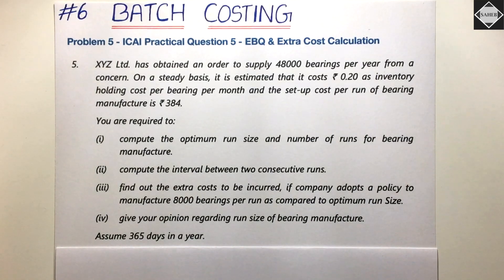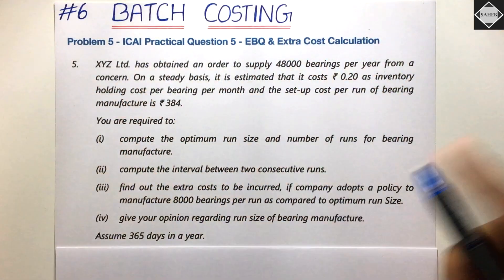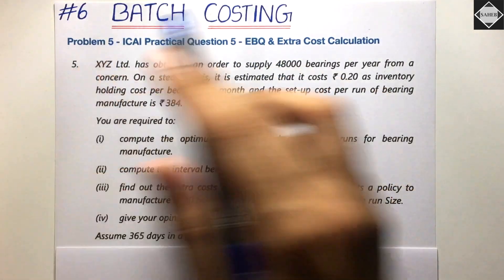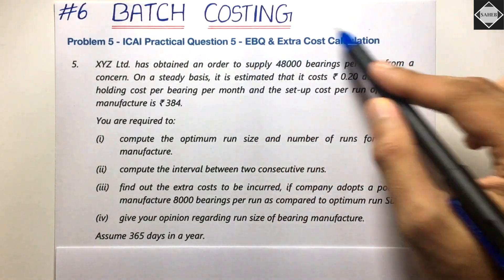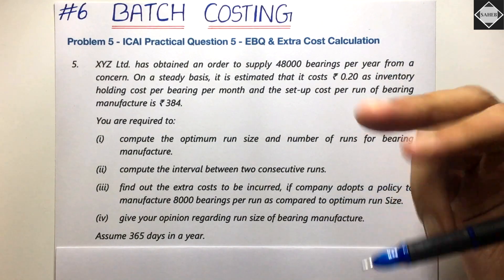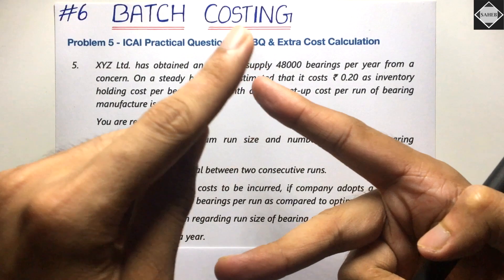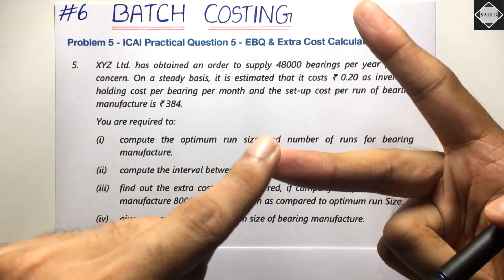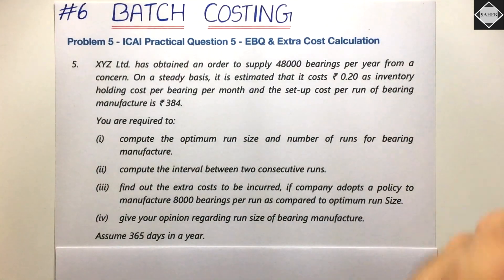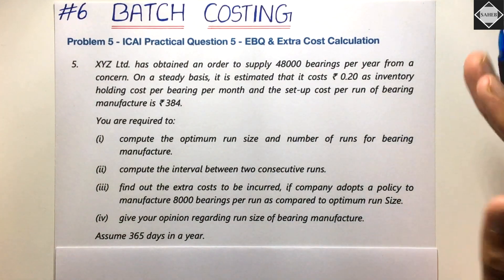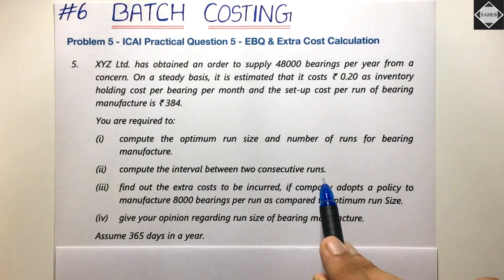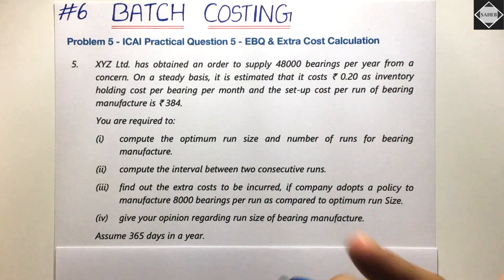Welcome back to Sahab Academy. Today in the sixth video of the batch costing chapter, we are going to solve practical question number five from the ICAI study material. The main things in this question are: calculating the Economic Batch Quantity (EBQ), computing extra cost by comparing two policies, giving an opinion on batch size, and finding the interval between two consecutive runs.